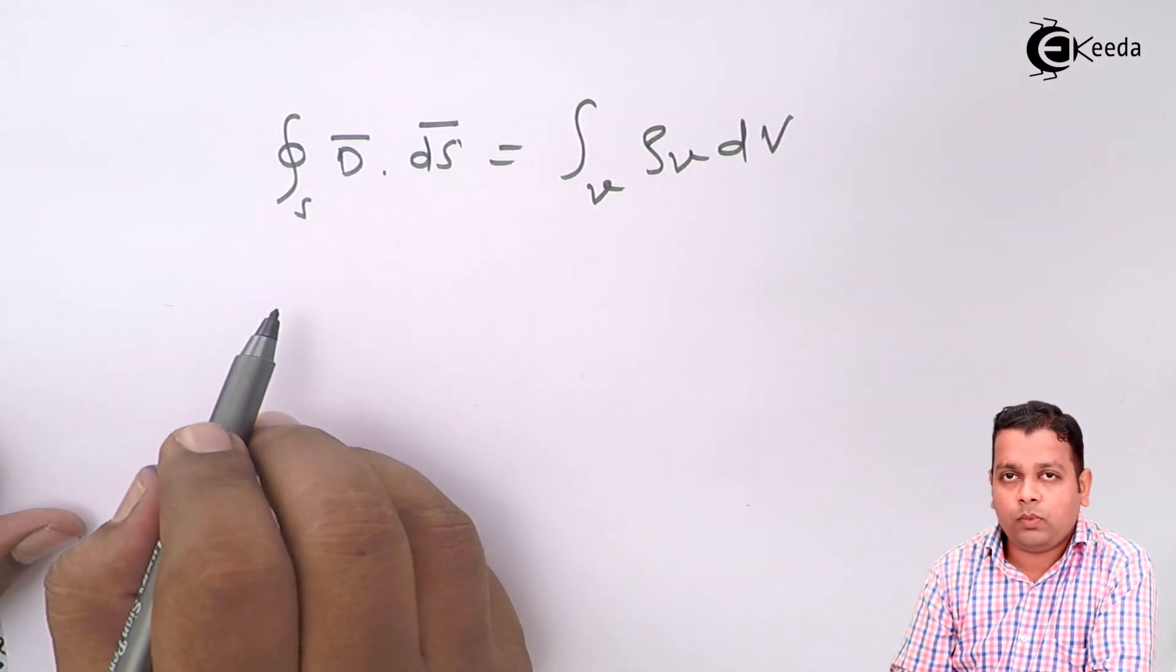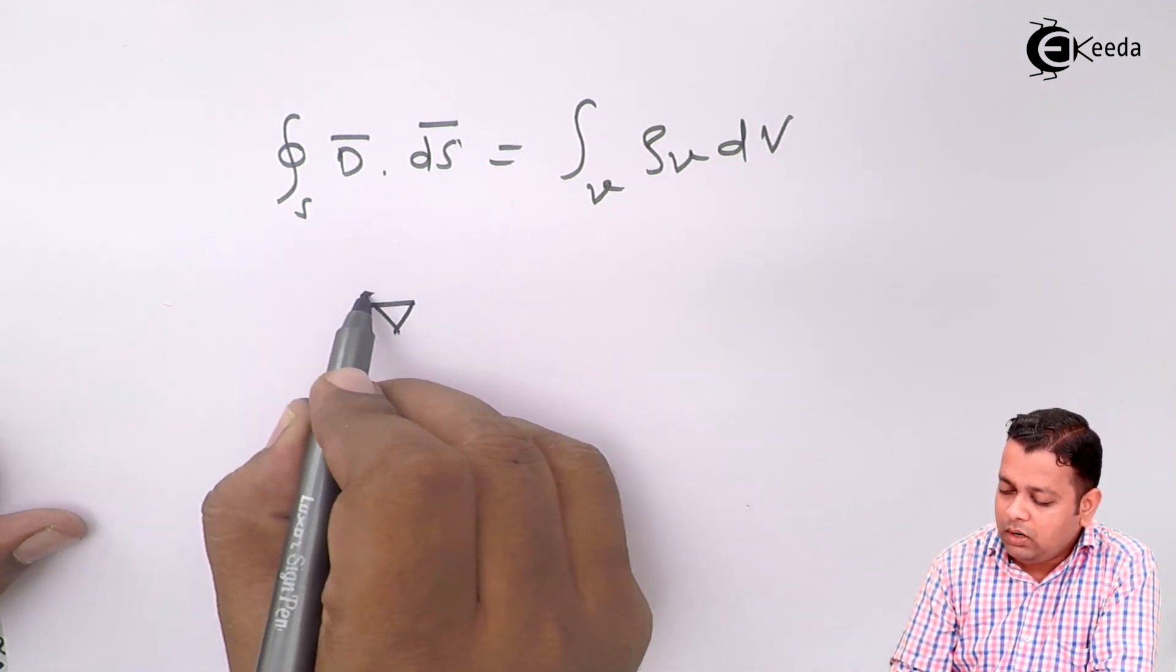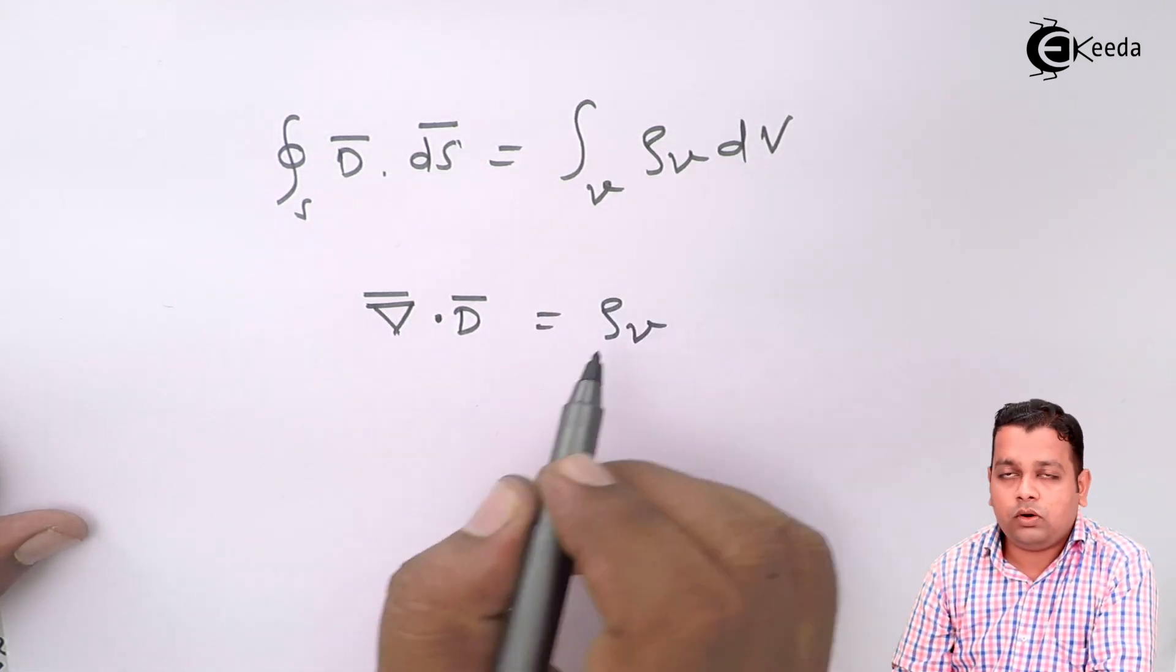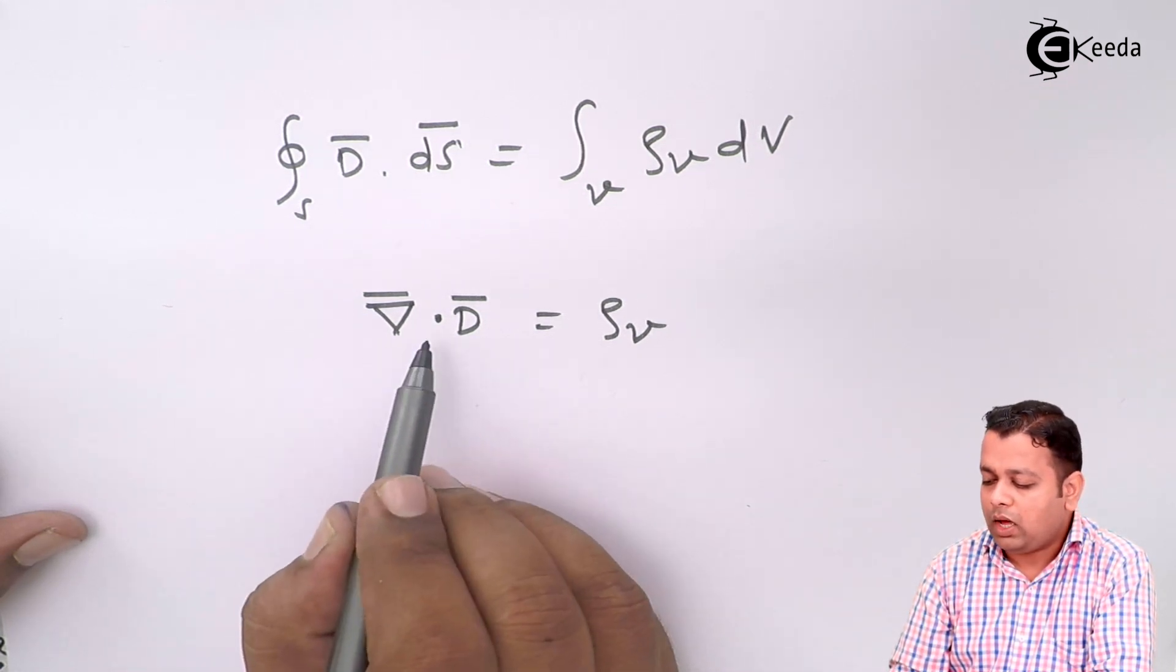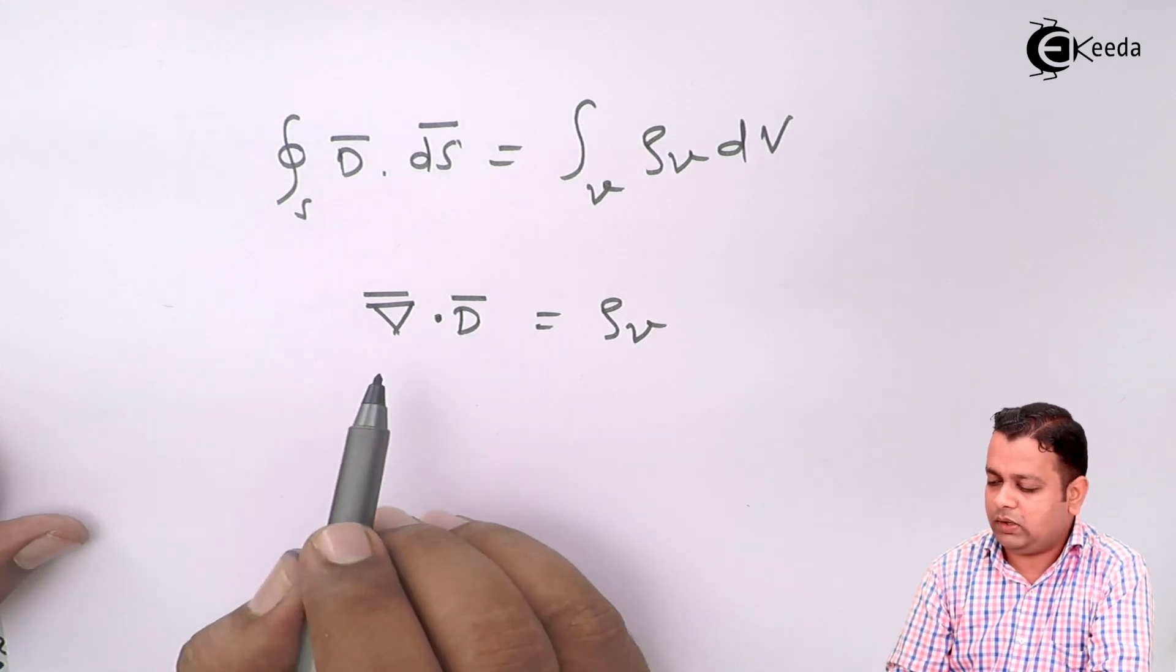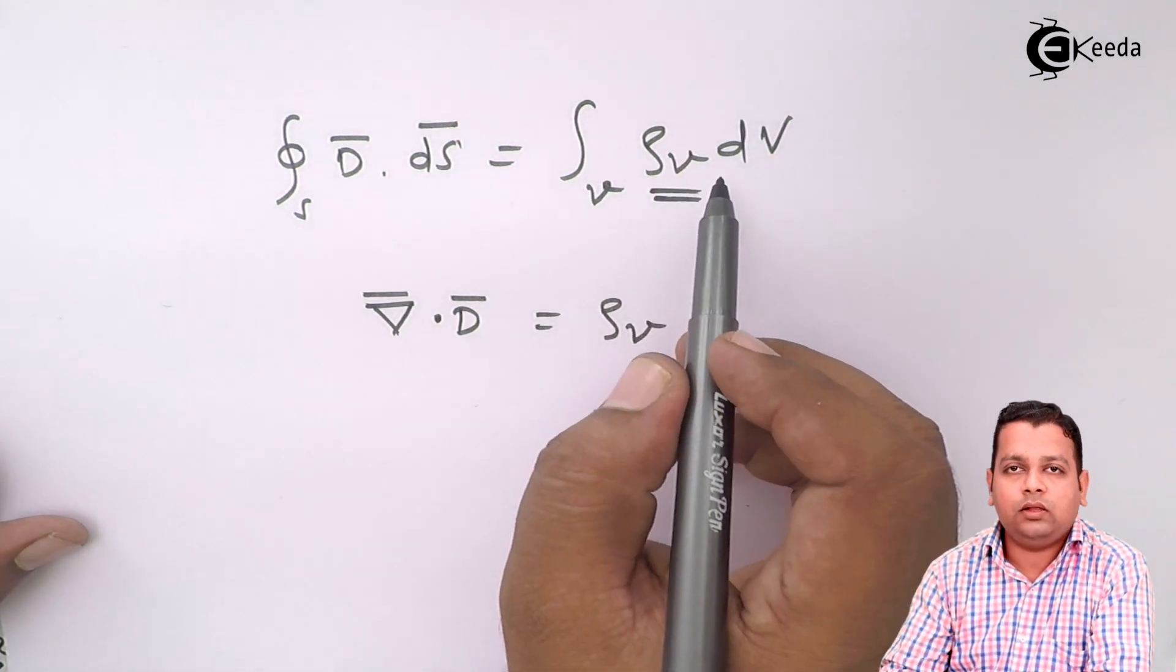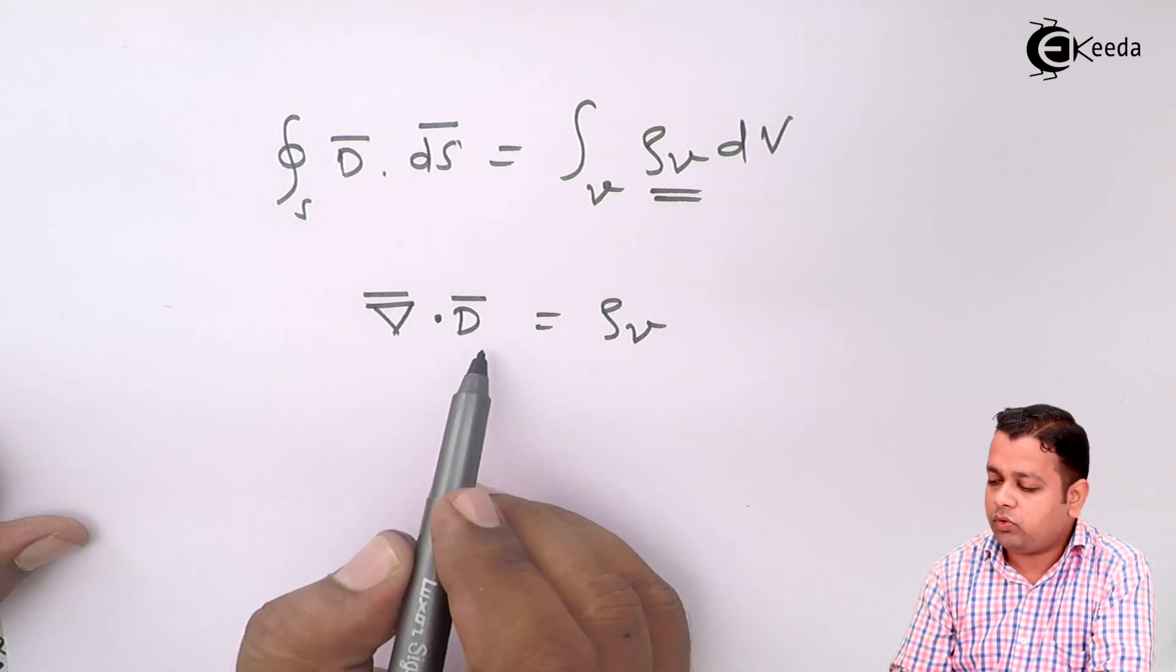Now in point form, which is also called differential form, we had the relation divergence of d, represented by del bar dot of d bar, was found to be equal to rho v. This is the representation of divergence of d bar, where d bar is electric flux density. Now using both the relations, let us have substitution of rho v in the right hand side of the integral form by divergence of d from the point form.